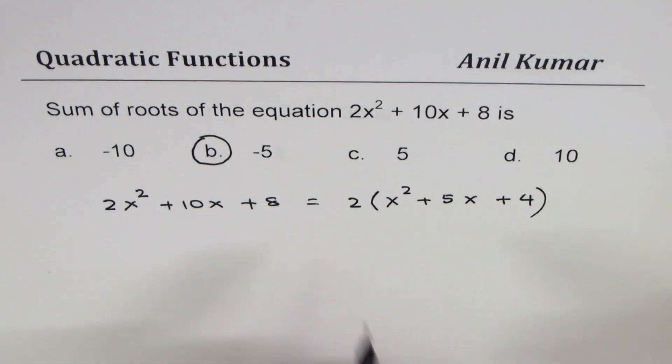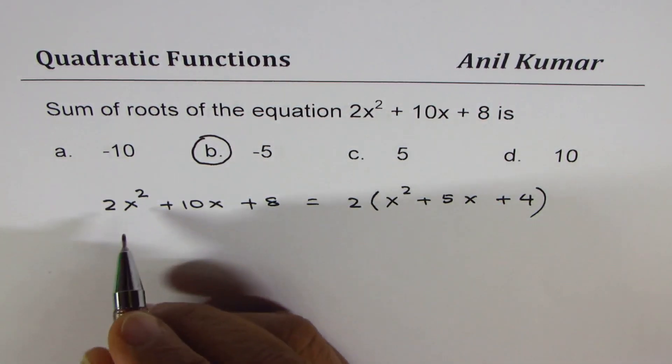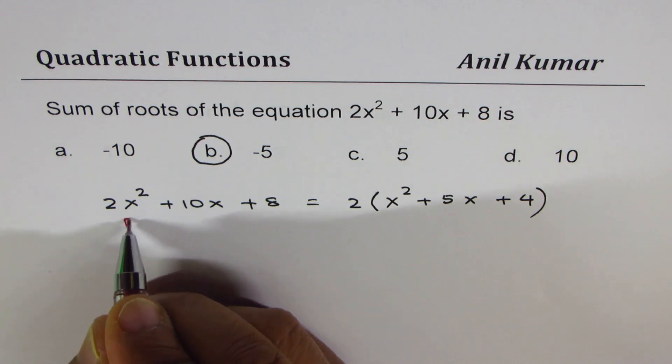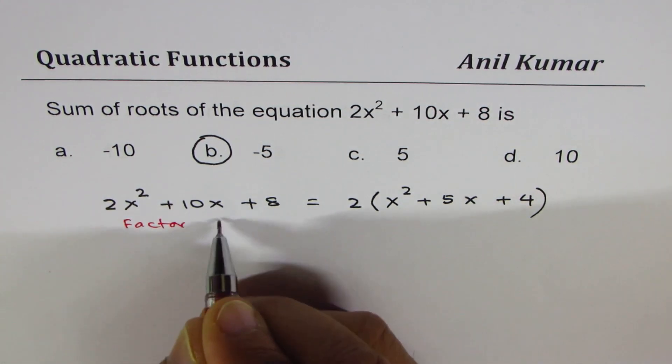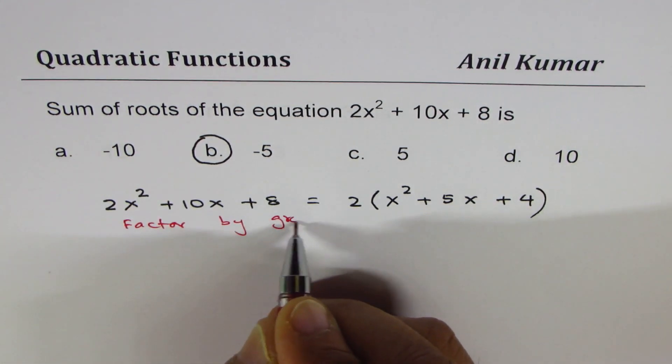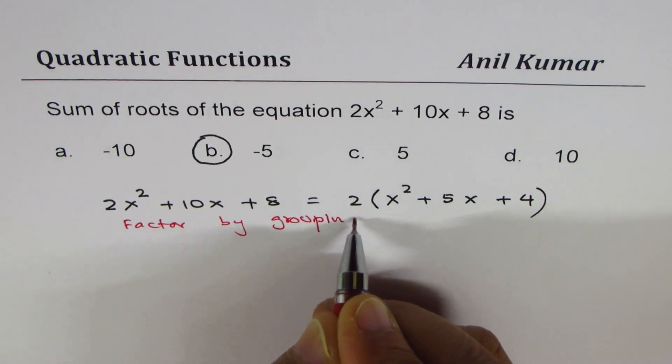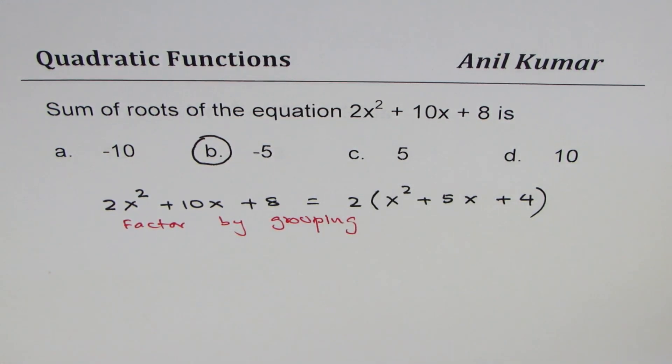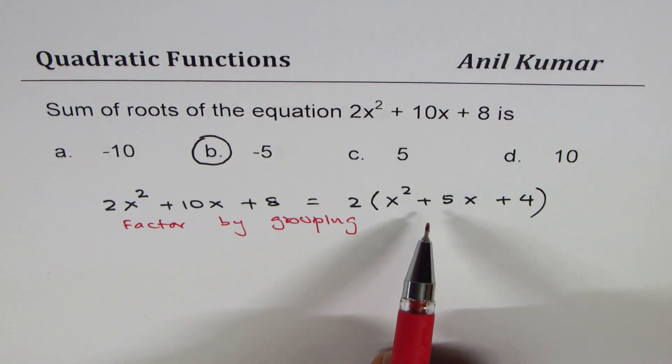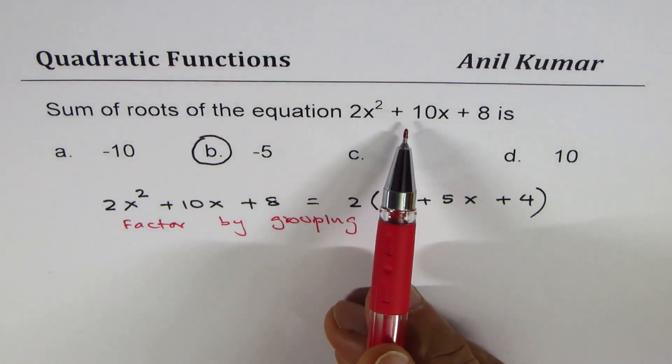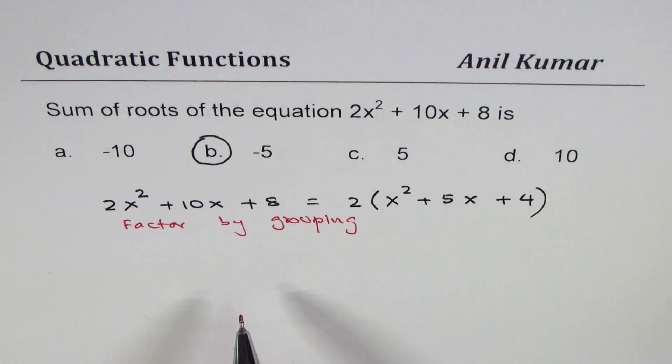Since we could factor by grouping right. So important is if you could factor by grouping. Then if you are factoring by grouping then the equation you are looking at is kind of different than what you see initially correct. So that is very important to understand.